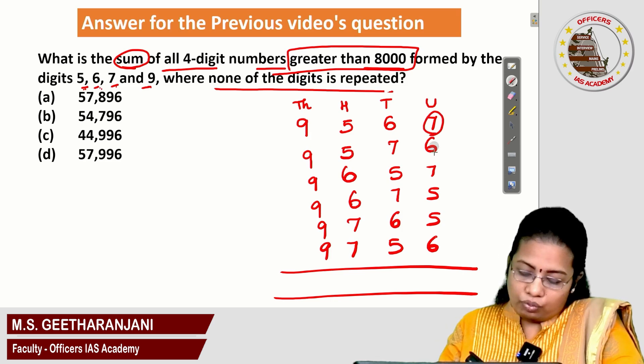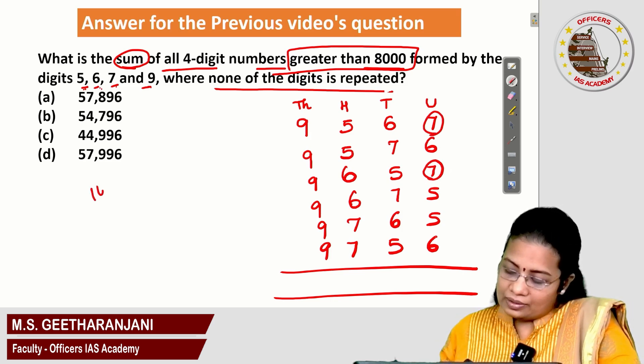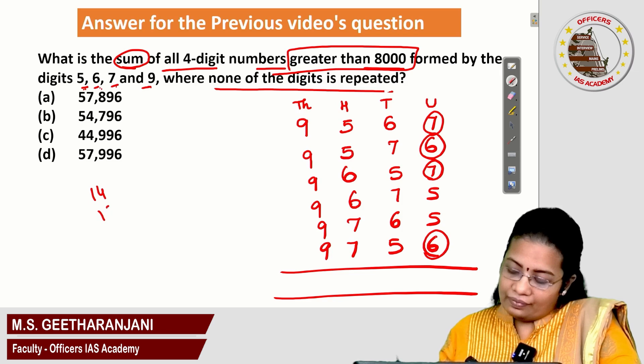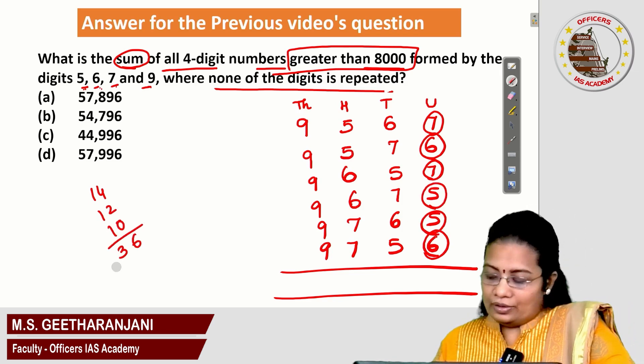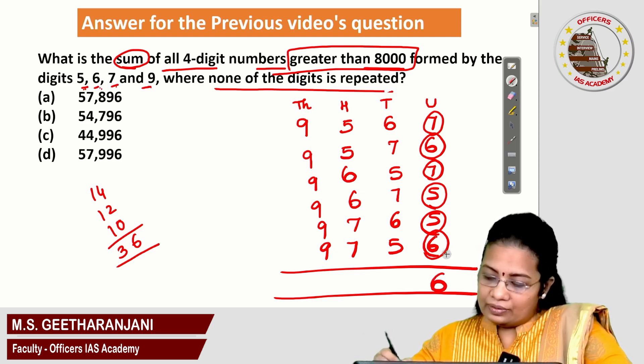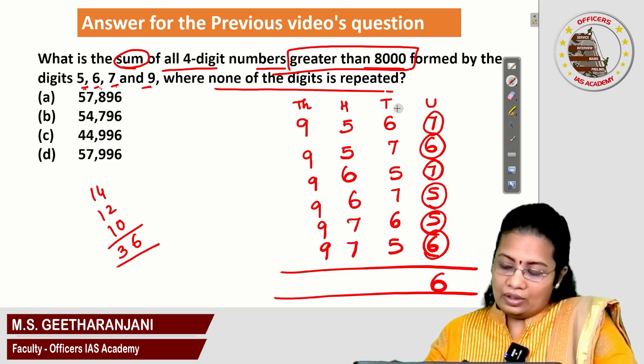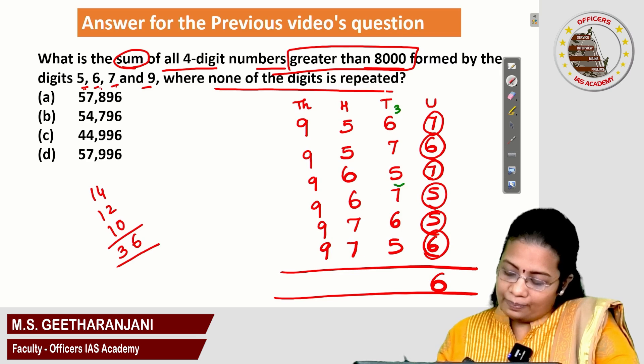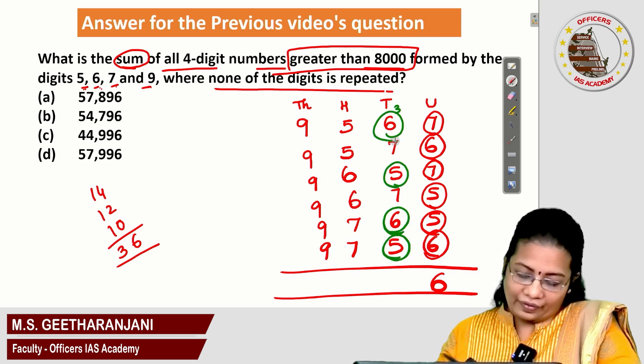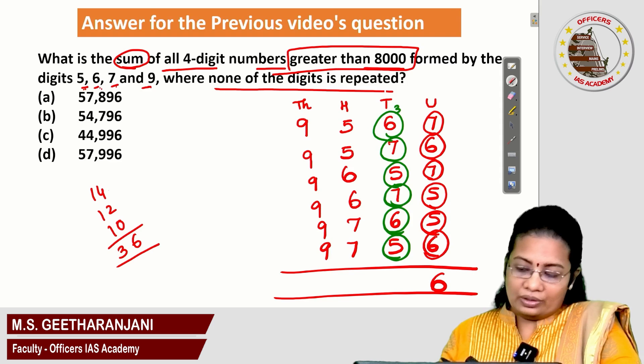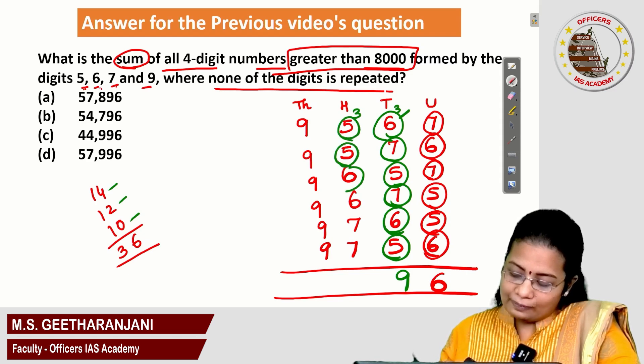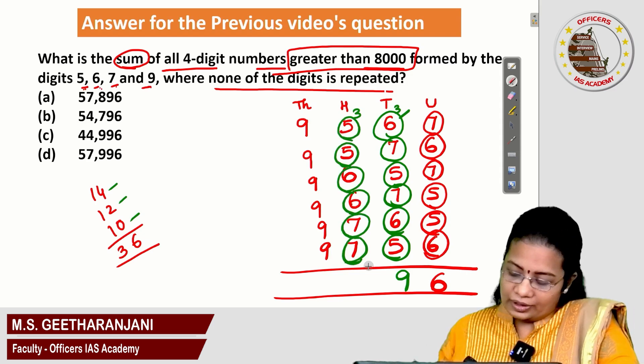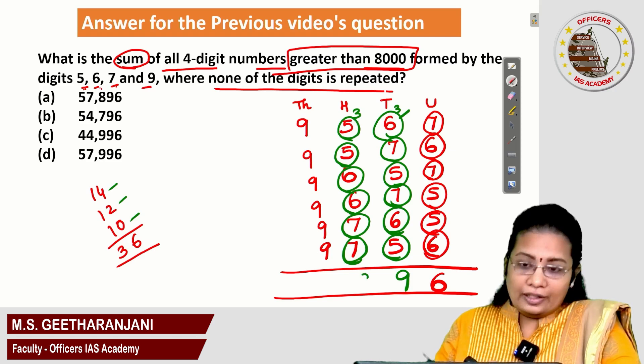7 plus 7, 14. 6 plus 6, 12. 5 plus 5, 10. How much do I get here is 36. I put 6 here. Remaining 3 carry forward. Here also, I can find the same thing. 5 plus 5, double 5, double 6, double 7. I will get the same 36 plus 3, 39. Again, I can see that double 5, double 6, double 7. That I got the value 36 plus 3, 39.